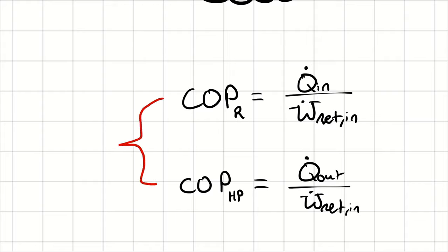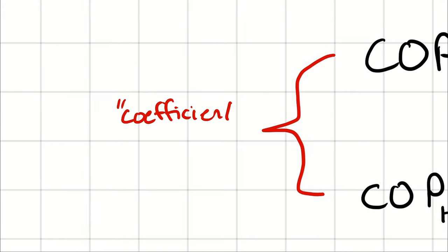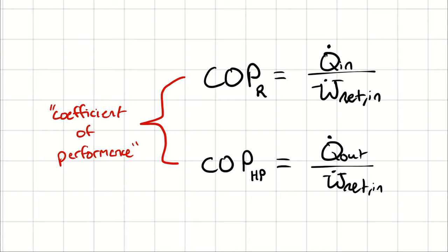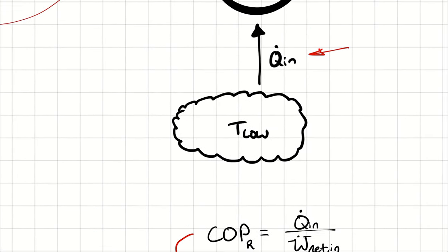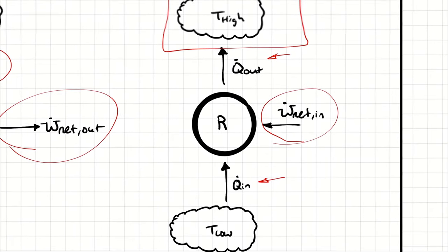We call it COP, or coefficient of performance. The only reason we call it something other than efficiency is because it's possible to have a coefficient of performance higher than 100%. A COP of three or four hundred percent gets confusing, so COP is referred to as a number rather than a percentage. For example, the refrigerator in my kitchen might be moving more heat than I'm paying to operate it. If it moved three kilowatts of heat for every one kilowatt I put in, that would be a COP of three — and that's not violating any laws of thermodynamics.